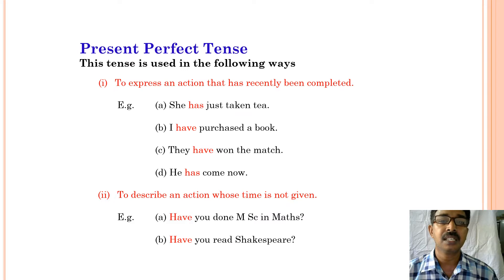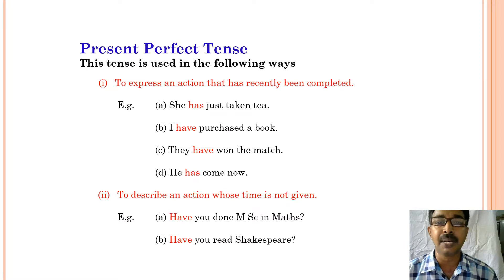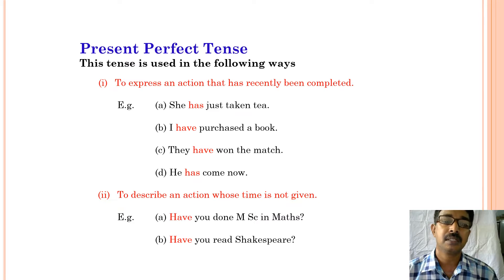Present perfect tense is used in the following ways. First, present perfect tense is used to express an action that has recently been completed. The examples are: she has just taken tea, I have purchased a book, they have won the match, he has come now.